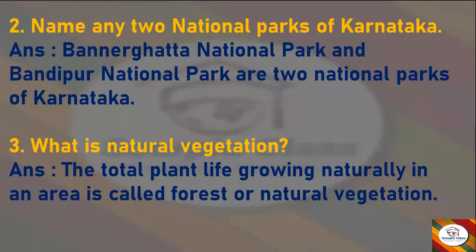Name any two national parks of Karnataka. Answer: Bandipur National Park and Bandipur National Park are two national parks of Karnataka. Next: what is natural vegetation? Answer: the total plant life growing naturally in an area is called forest or natural vegetation.